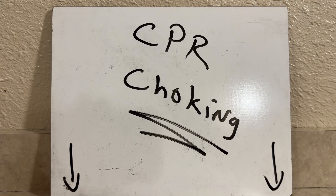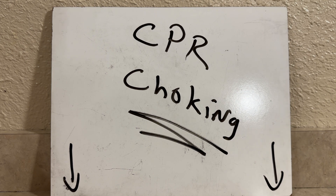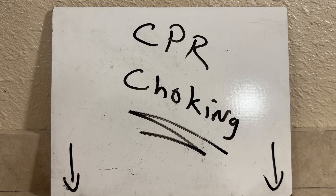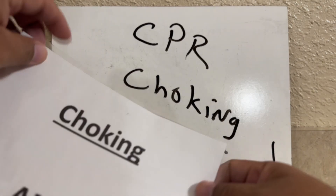Welcome back to the next lesson — CPR choking. This is just going to be one part of choking. We already established the airway obstruction, complete obstruction. So now here is the scenario: we have a patient who is responsive. We're going to cover three populations — adult, child, and infant. Let's keep this as simple as possible.